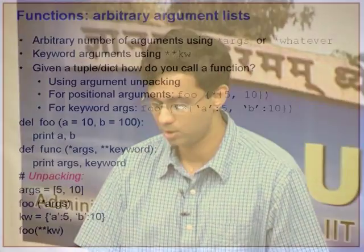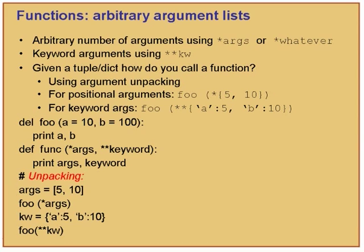You can do the same thing with keyword arguments. Notice this dictionary {'a': 5, 'b': 10} — if you say foo(**{'a': 5, 'b': 10}), it expands this out into a=5, b=10 and calls f. So you can create functions that do whatever you want, return values, use default arguments, keyword arguments, and call functions using argument unpacking.